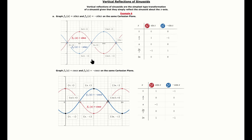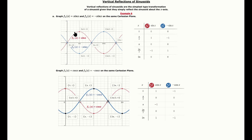Reflections are the simplest transformation. For sin(x) and −sin(x): the negative simply flips the outputs — x-values stay the same, all y-values are multiplied by −1, producing a vertical reflection. The same applies to cosine: −cos(x) reflects the standard cosine curve vertically.